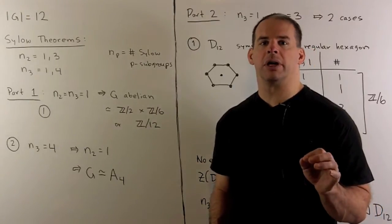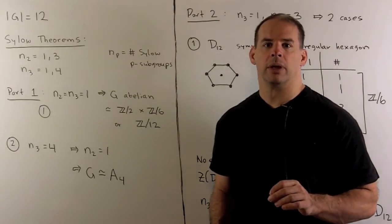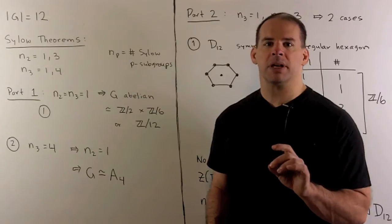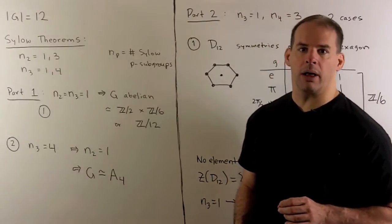Part 2 of Sylow theory for order 12 groups. The problem: we want to classify the isomorphism types of finite groups of order 12.